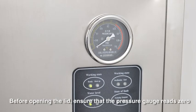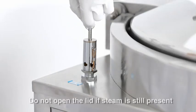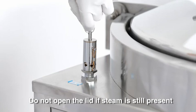Before opening the lid, ensure that the pressure gauge reaches zero. Pull the safety valve ring upwards. Do not open the lid if steam is still present.